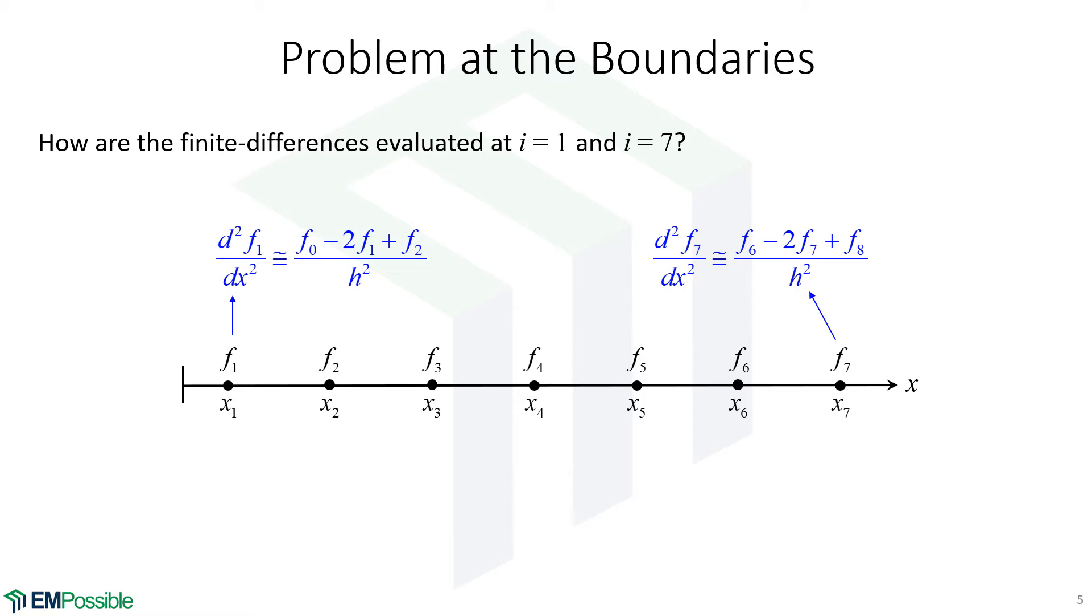Now let's think about the boundaries, the first and the last point on the grid. If we were to write our finite difference at the first point here, it would be F0, which exists outside the grid and doesn't actually exist at all, minus 2 times F1 plus F2 divided by the spacing between the points squared, that's H squared.